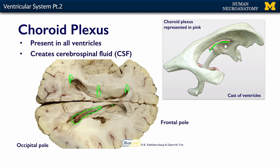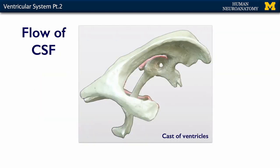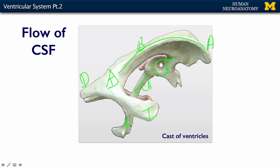Let's review the flow of CSF. We have our two lateral ventricles — with the anterior horn, inferior horn, posterior horn, trigone, and body — plus the third ventricle and the fourth ventricle. Cerebrospinal fluid is made throughout all these ventricles. It exits through the interventricular foramen into the third, then through the cerebral aqueduct into the fourth, and then out through two foramina of Luschka and one midline foramen of Magendie into the subarachnoid space.